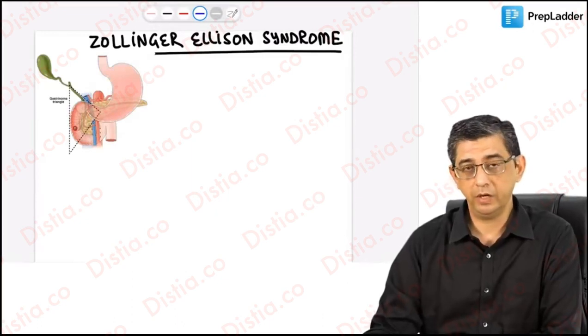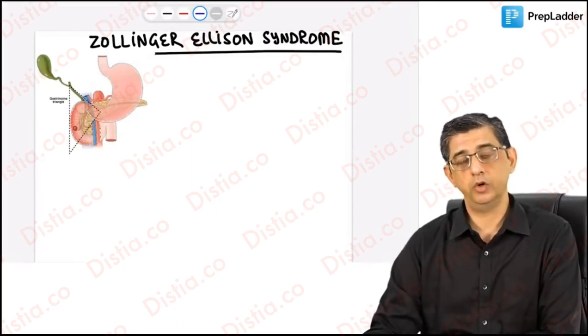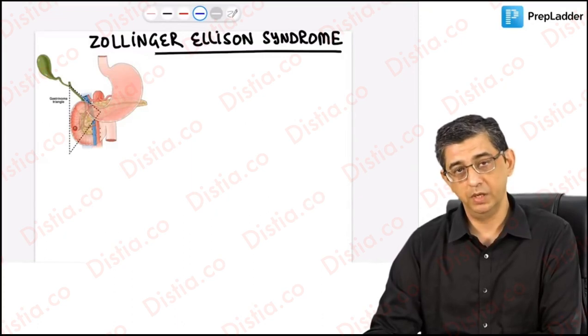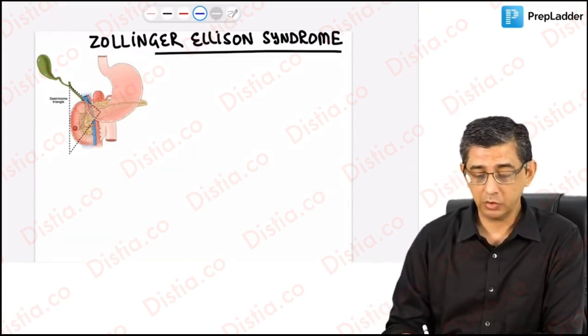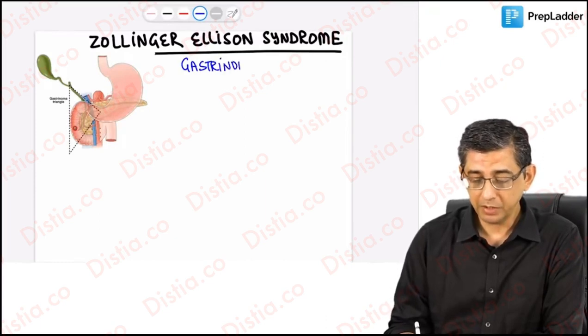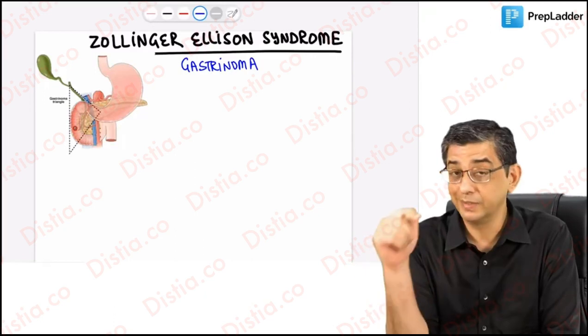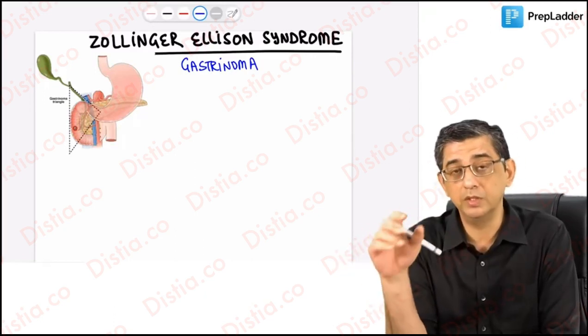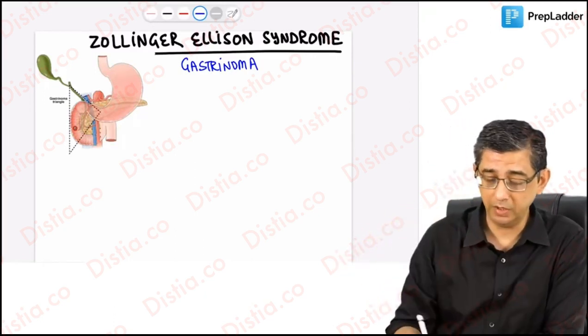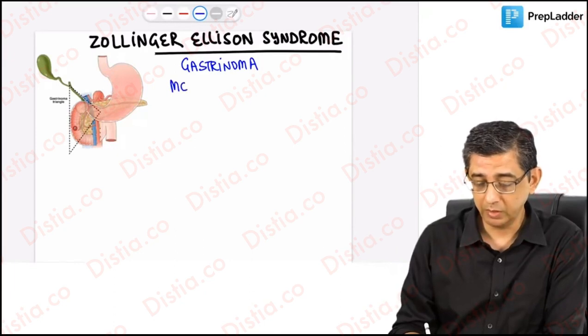Hi guys, welcome back. I shall now be discussing Zollinger-Ellison syndrome, which is also called gastrinoma. The usual question will be asked with respect to the site of this tumor. Please appreciate the fact that the most common site of G cells is the stomach, but this tumor is not found in the stomach.